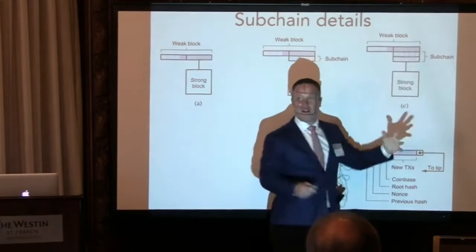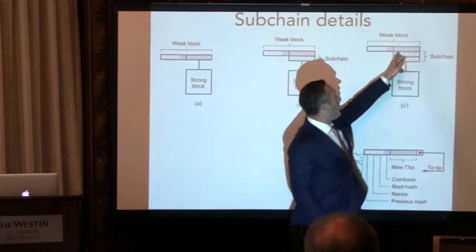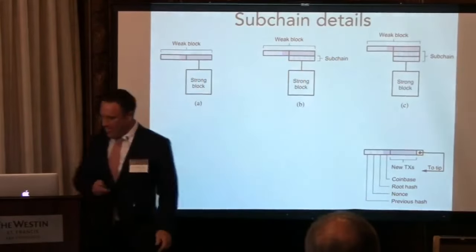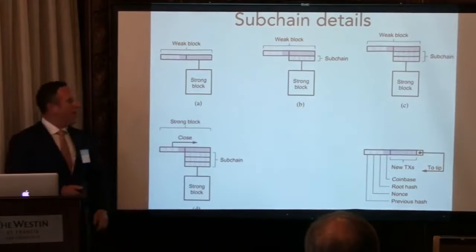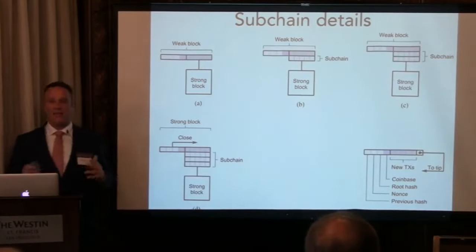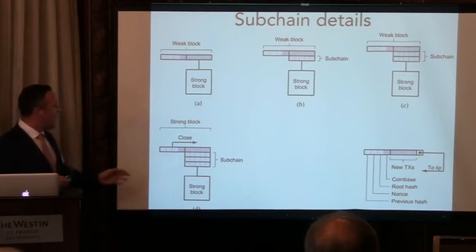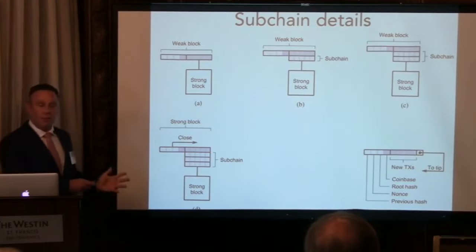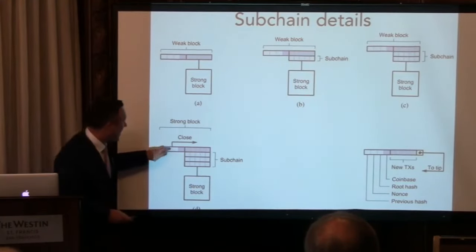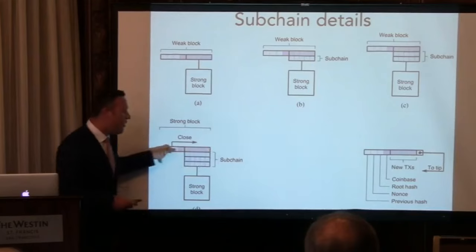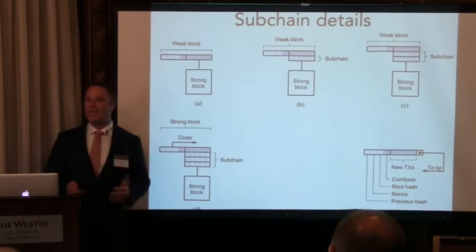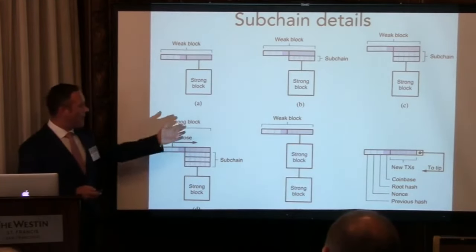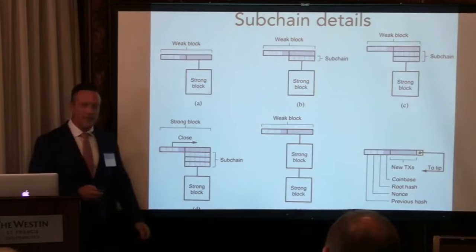Now these two layers are common across the network, whereas all the miners are working on their unique top layer. Eventually someone finds a nonce that satisfies the strong target. He broadcasts that block the same way he broadcasts a weak block, sending only his top layer. Everybody realizes that's a strong block, the subchain closes, and the process begins again.